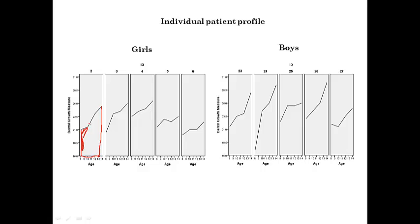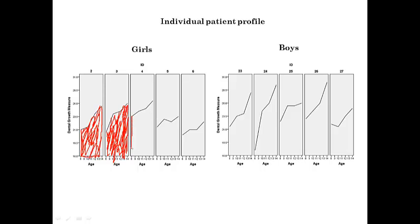So this is an area. We compute this area for each curve. For ID number three, the area would be here. A subject with greater growth measurement will of course have a greater area under the curve. So we will compute this area under the curve for each patient.